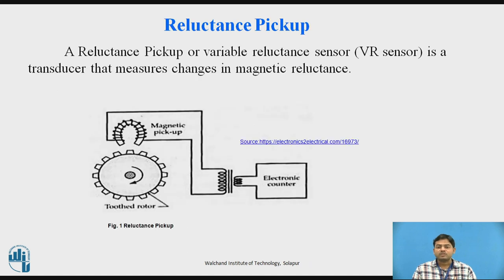Let's start with the reluctance pickup. The name itself suggests reluctance in the magnetic path. The reluctance pickup is also called a VR sensor or variable reluctance sensor. It is a type of transducer which converts changing reluctance into equivalent current, because current and reluctance are directly proportional.